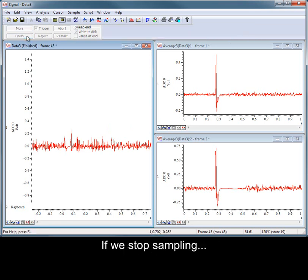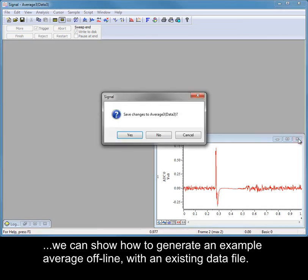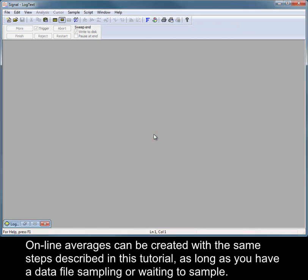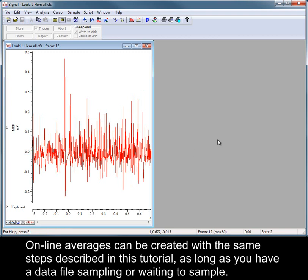If we stop sampling, we can show how to generate an example average offline with an existing data file. Online averages are created with the same steps described in this tutorial, as long as you have a data file sampling or waiting to sample.